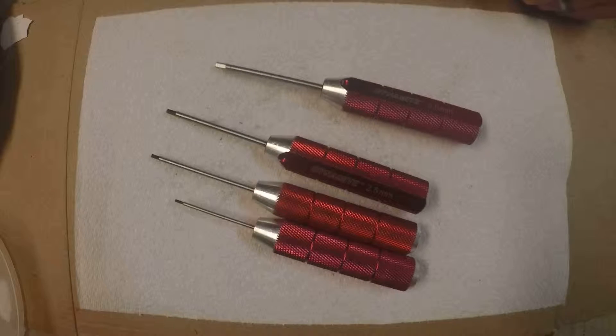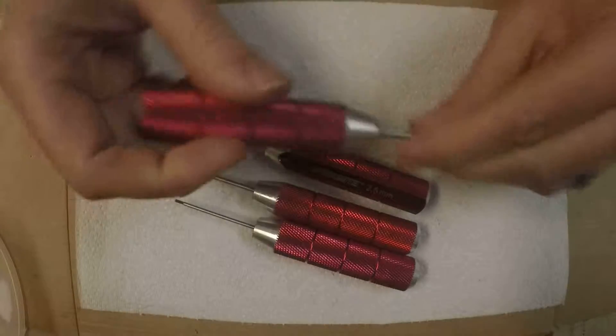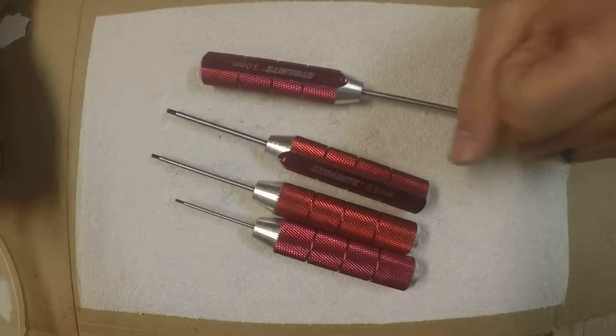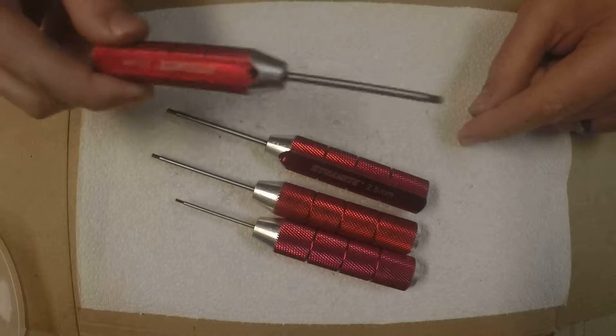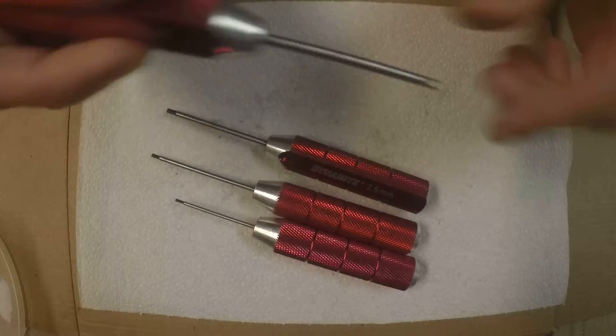Next up, most important to be honest, hex keys. Now you can get the little tray of different heads, but the problem with that is you're going to lose them, you can't pry with them, you'll be swapping parts in and out.